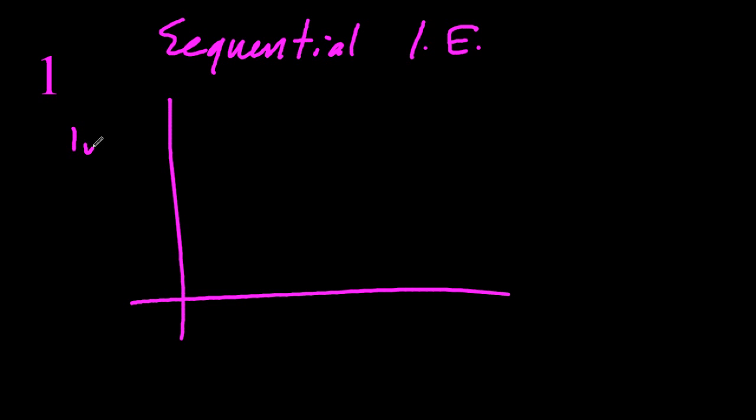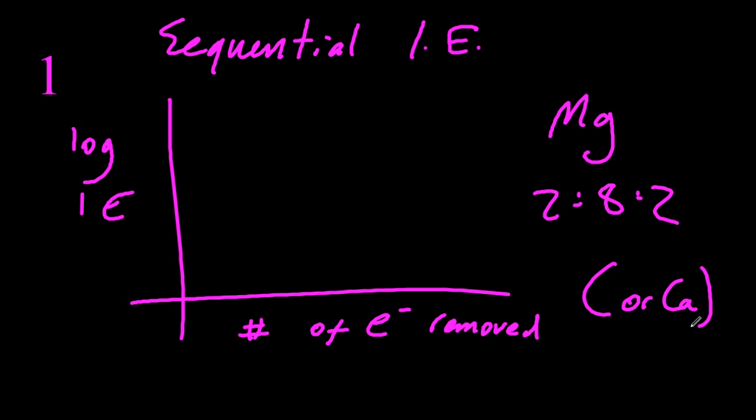Sequential ionization energies. The IB likes to choose magnesium or calcium because they have palindromic electron configurations.